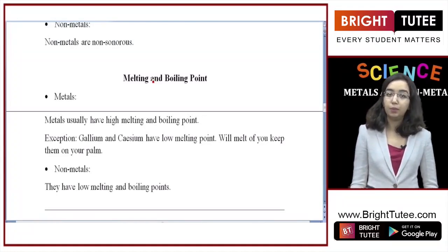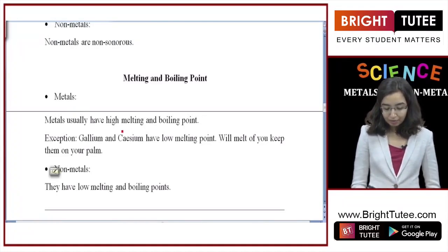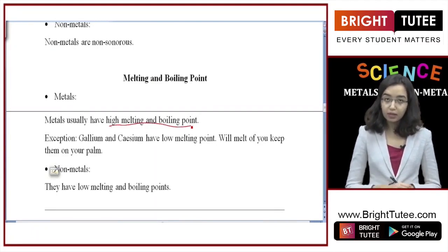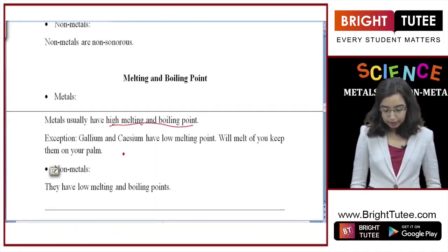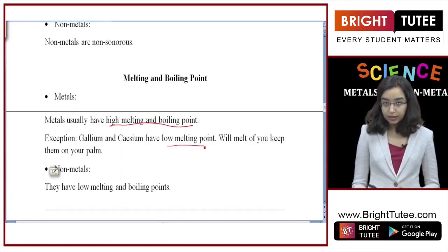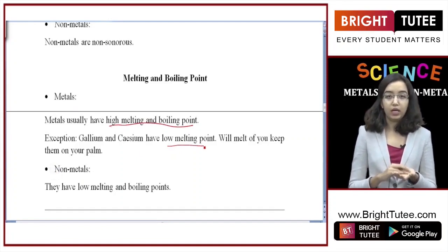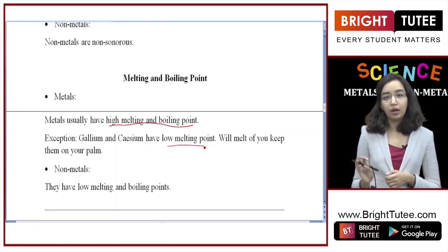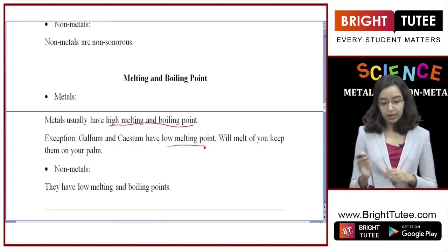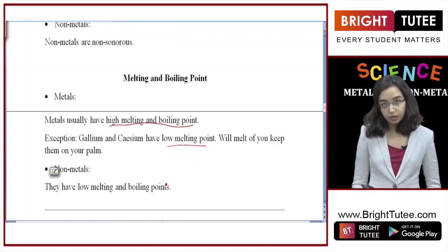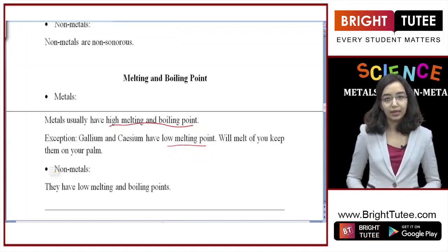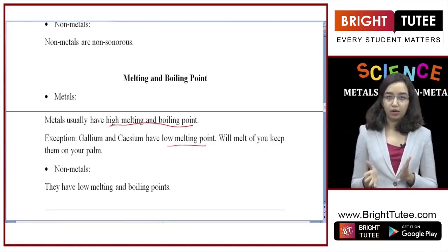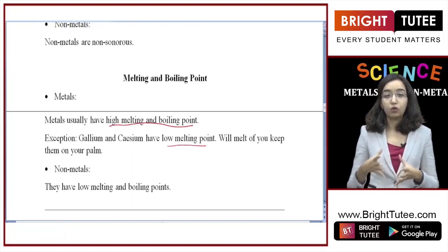The last property is melting and boiling point. Metals usually have high melting and boiling points, but there are exceptions. Gallium and cesium have low melting points — they will even melt when kept on your palm from the body heat generated by human beings. All other metals generally have high melting and boiling points. Nonmetals on the other hand have very low melting and boiling points. So these were the physical properties of metals and nonmetals — most of them are contrasting in nature, and now you will be able to identify a metal or nonmetal based on its properties.